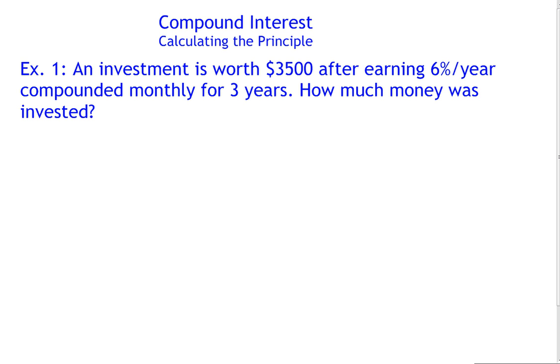So we'll just list what we know. We know that the amount is $3,500. We know that it earns 6% per year, but it's compounded monthly.